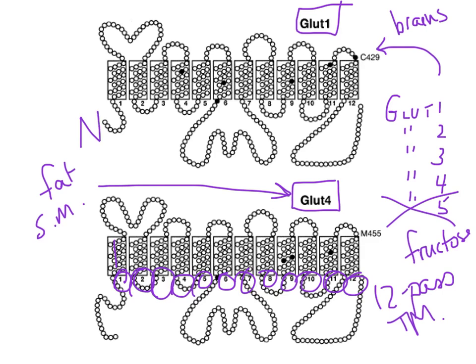You might ask: if this is the N-terminus and this is the C-terminus, which side do they face? Do they face the lumen of the vesicle, or the cytoplasm? Regardless, they face the same way for GLUT1 and GLUT4. The main way these are regulated is that GLUT4 is regulated by insulin, and GLUT1 is not regulated by insulin at all.